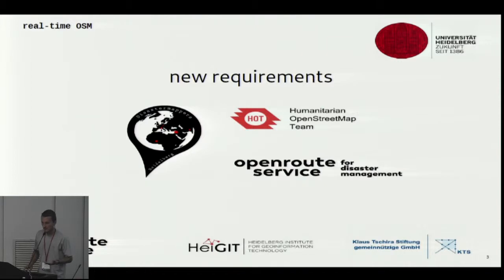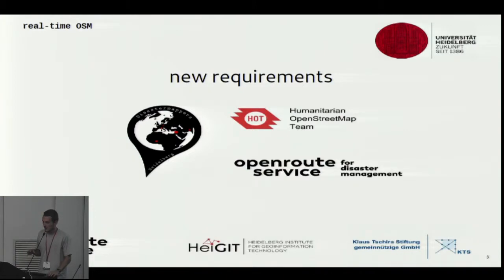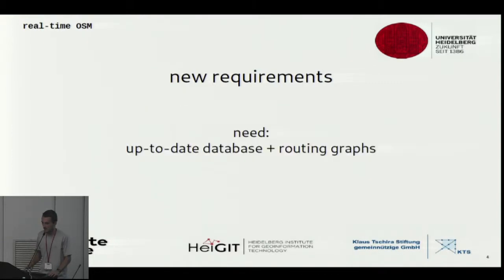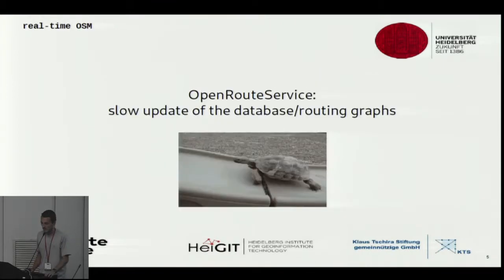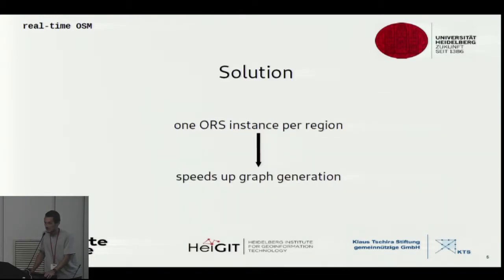Over time the Open Route Service evolved and had new requirements. For disaster mapping, what you need foremost is up-to-date data and up-to-date routing graphs. But graph updates are very, very slow. One solution we applied was having individual instances for individual regions, which very much speeds up graph generation.